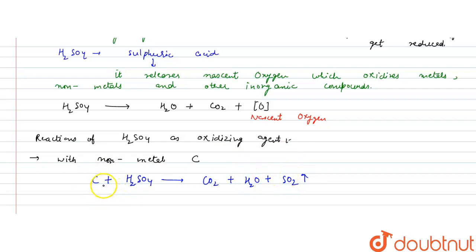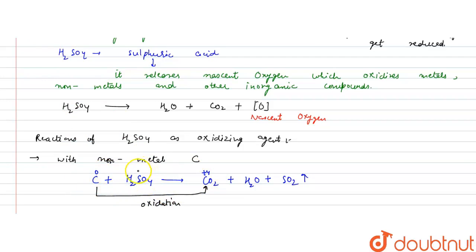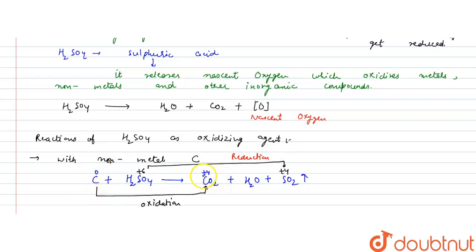Here carbon is present in zero oxidation state and in CO2 it is in +4 oxidation state, since oxygen is always −2. So carbon has been oxidized from 0 to +4. Sulfur in H2SO4 is in +6 oxidation state and has gone to +4 in SO2, so it has been reduced. This is the work of the oxidizing agent — to oxidize others and reduce itself.